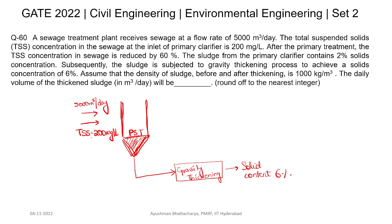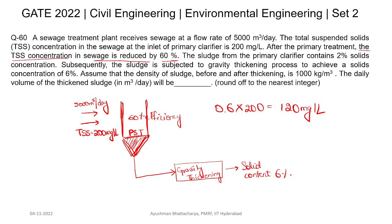The initial total suspended solid concentration is 200 mg per liter. Removal in the primary clarifier is 60%, so 0.6 × 200 = 120 mg per liter. So 120 mg per liter is removed because of 60% efficiency. The total suspended solids removed — after primary treatment the concentration is reduced by 60%, meaning 120 mg per liter has been removed.